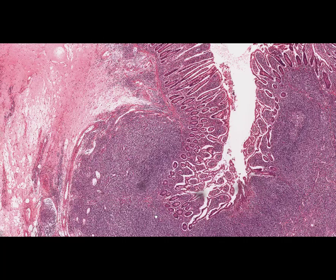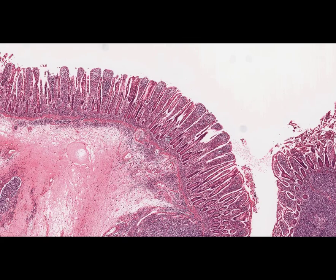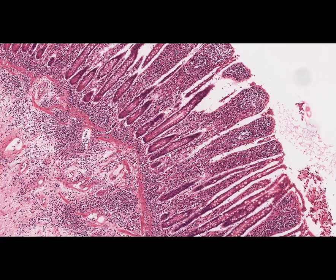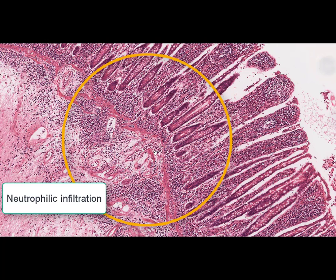Secondly, all the layers of the intestinal wall are infiltrated with neutrophils, macrophages, eosinophils, and plasma cells. The neutrophilic infiltration is mostly expressed in the mucous and submucous layers of the intestine. Sometimes the neutrophilic infiltrations take on the appearance of so-called crypt abscesses.